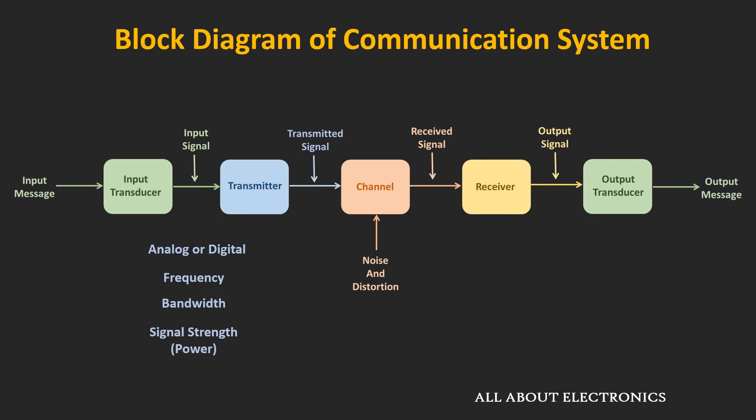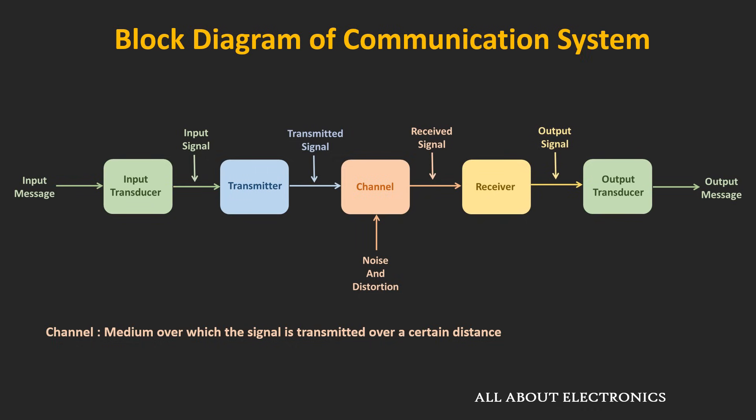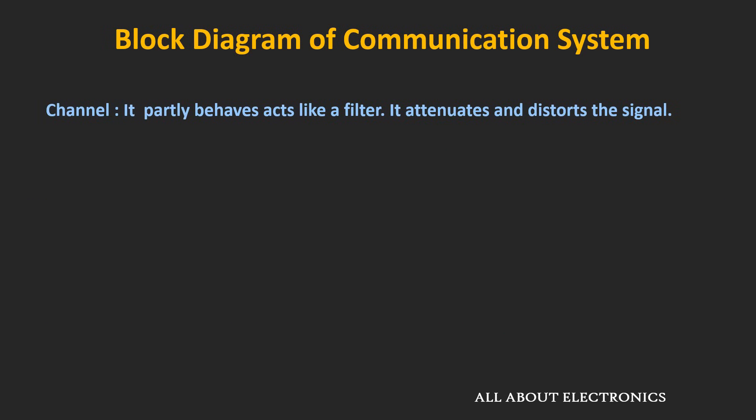The signal after the transmitter is known as the transmitted signal, and it is sent over a particular channel. A channel is the medium over which the signal is transmitted over a certain distance. This channel could be a physical channel like optical fiber or coaxial cable, or it could be a wireless channel like a radio link. The channel partly behaves like a filter and attenuates different frequencies of the transmitted signal differently.